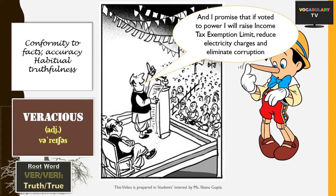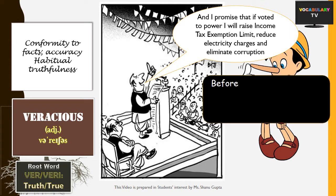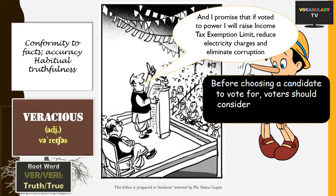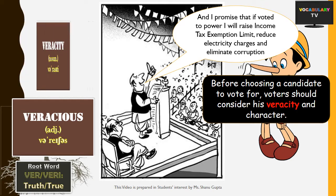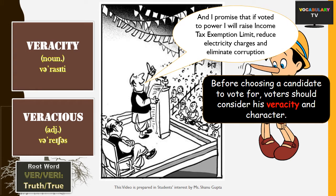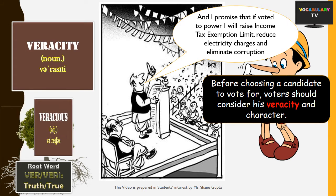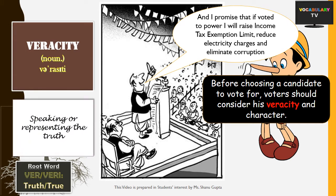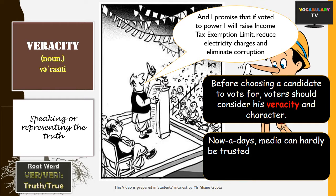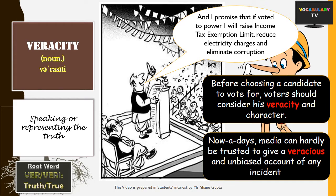For instance, before choosing a candidate to vote for, voters should consider his veracity and character. The related adjective is 'veracious,' and a veracious person is one who speaks or represents the truth. For example: 'Nowadays, media can hardly be trusted to give a veracious and unbiased account of any incident.'